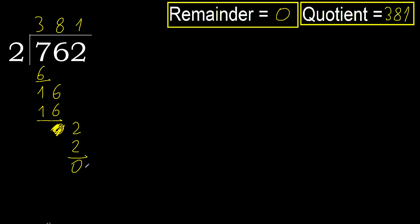The remainder is 0. Therefore, 762 divided by 2 is 381.